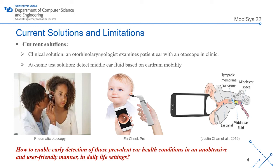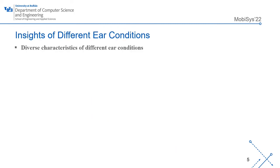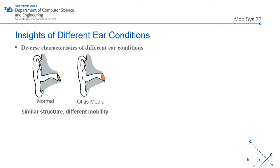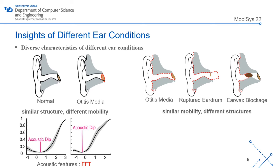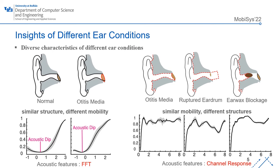How to enable early detection of those prevalent ear health conditions in daily life settings? We can see in this figure that the ear canal structure is almost the same, but the eardrum mobility is different. In another case, the ear canal structures are different and the eardrum mobility is low. In order to distinguish eardrum mobility, we utilize the acoustic features of FFT. We can see that FFT features are different.